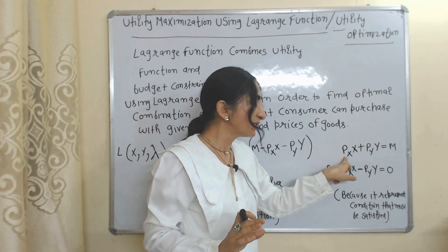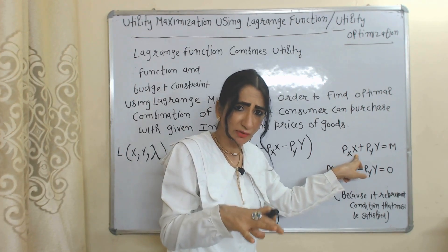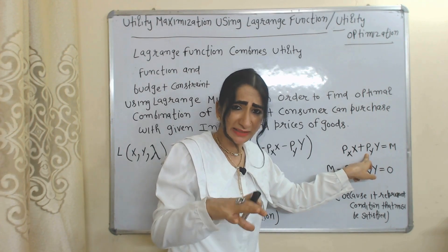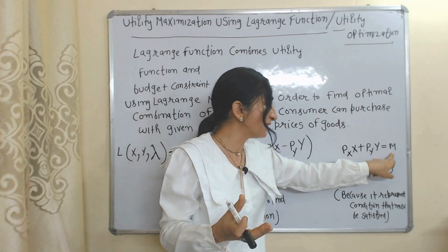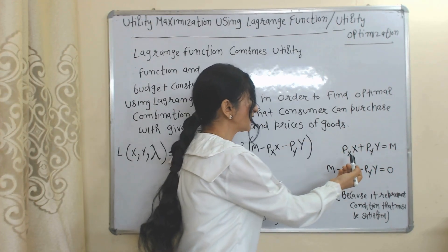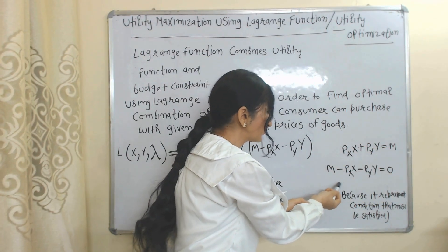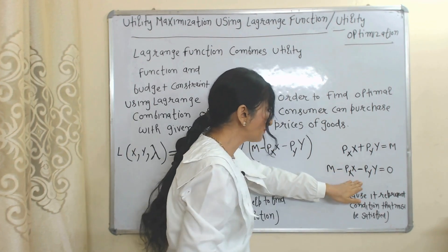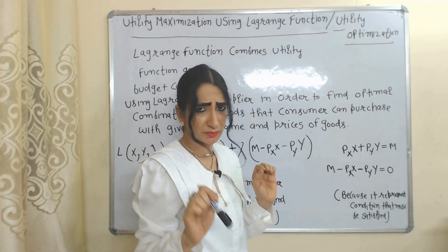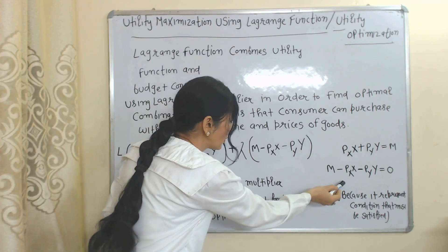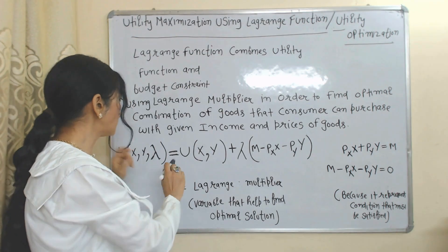The budget constraint formula is: Px times x plus Py times y equals m. Px is the price of x, x is the quantity of x, Py is the price of y, y is the quantity of y, and m is the income of the consumer. If we bring Px and Py to one side, the equation becomes rearranged. We set the budget constraint equal to zero because it represents a condition that must be satisfied.